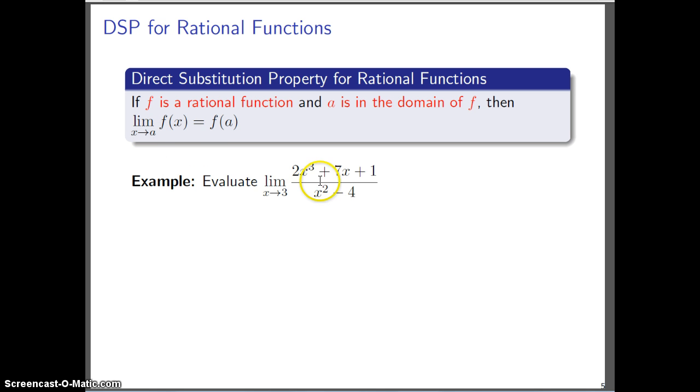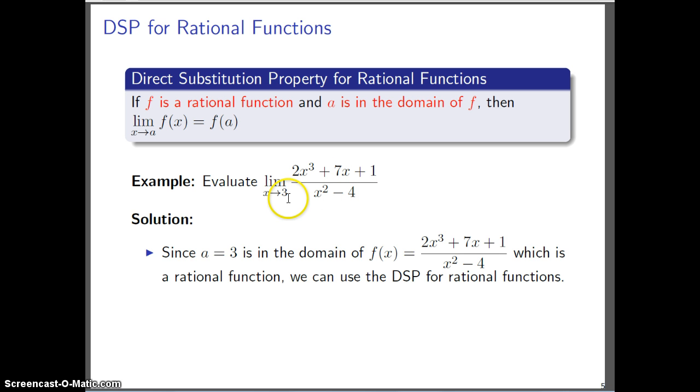Let's try using this. Here you have this rational function, and we're going to need to check if we're going to use this property. We have to check this, not only that it's a rational function, but the second condition, which is that a, or in this case, namely 3, 3 better be in the domain. So if you were to plug in 3 in the denominator, you don't divide by 0. So 3 is in the domain. We can use the DSP for rational functions, and that means that this thing which we were asked to compute, simply all you do is you plug in x is 3 everywhere, and you get this, and that simplifies to 8.